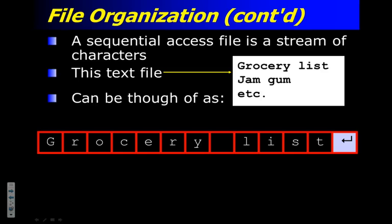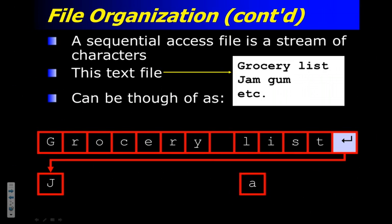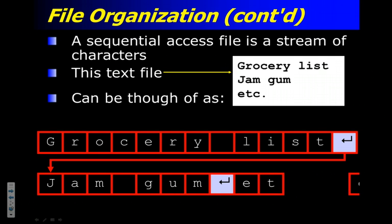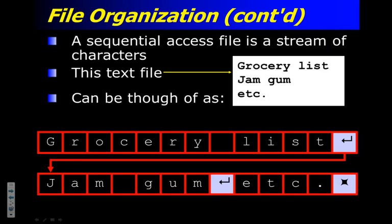Does anyone remember what the two characters were? There'd be a prize. The answer is a carriage return and a line feed. At least the sound effects are waking you guys up this morning. And then another carriage return line feed, and then one other character at the end. Does anyone remember what that one was called? The end of file marker. Essentially, you can think of a file as a collection of these characters.